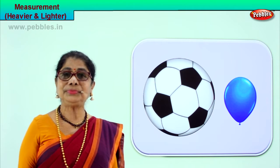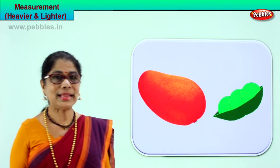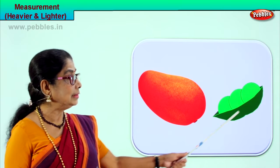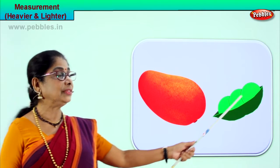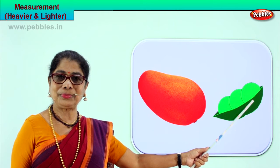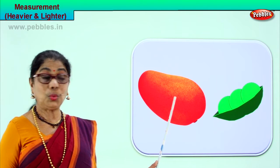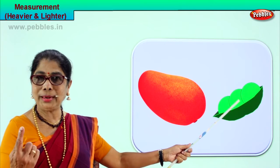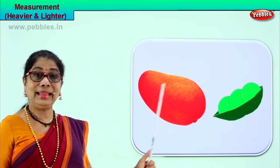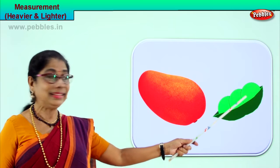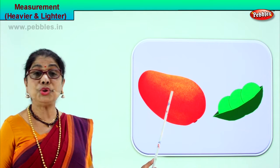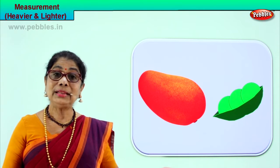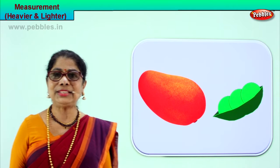Lighter, heavier. Shall we look at one more picture? Did you understand the two measurements — lighter and heavier? We have a mango here and here is a pea pod with just three peas in it. The mango is heavier than the pea pod. The single pea pod with three peas is lighter than the mango.